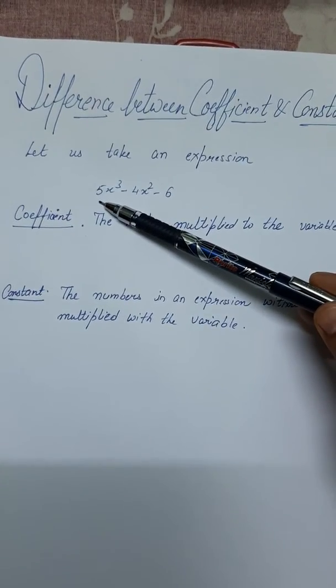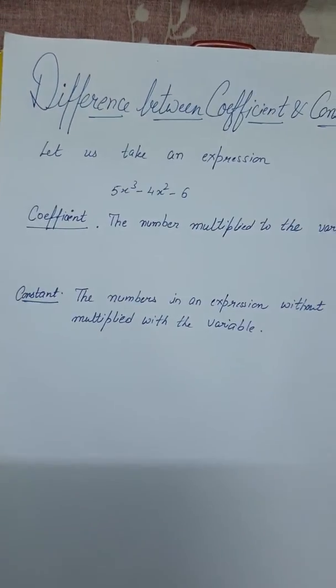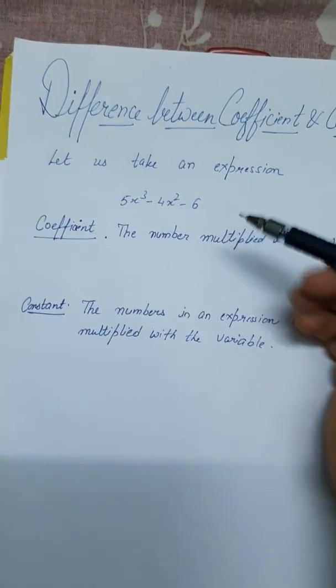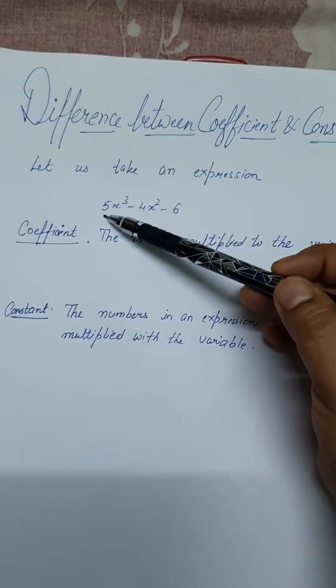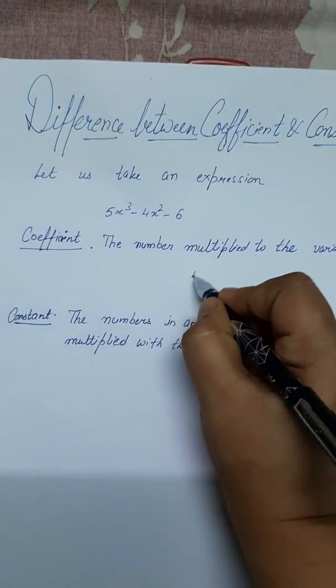We can say that the leading coefficient, or the cubic power coefficient, 5x³ has a coefficient of 5. That will be 5.